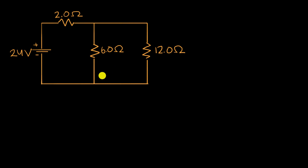We have an interesting circuit here, and the goal of this video is to figure out what is the current that flows through the six ohm resistor. Pause this video and see if you can work through it.